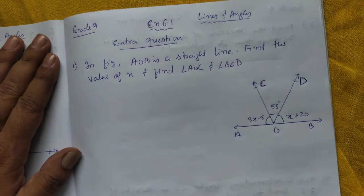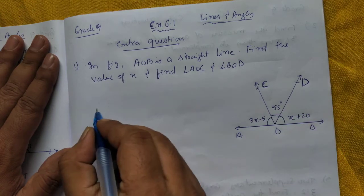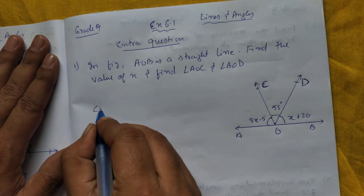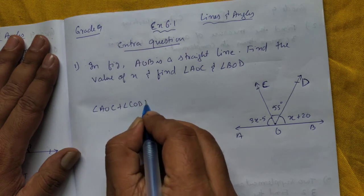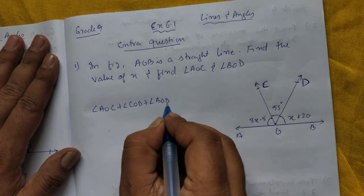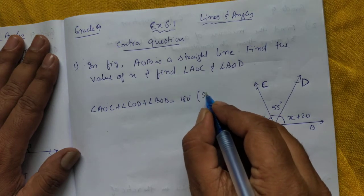So how we are going to find is, if I add all the angles, what will be the answer? Angle AOC plus angle COD plus angle BOD, it will be 180 degrees, because AOB is a straight line or you can say straight angle.